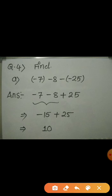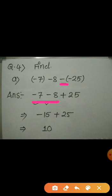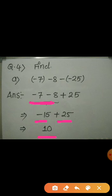Now come to question number 4, where we find the value of integers. In the first example: minus 7, minus 8, minus of minus 25. First, open the brackets: we get minus 7, minus 8, and minus of minus 25 becomes plus 25. Now we have 3 integers; the first two are negative, so we add them first: minus 7 plus minus 8 equals minus 15. Then we add plus 25 to it. Since we have one positive and one negative integer, we subtract: 25 minus 15 equals 10. Hence the answer is 10.